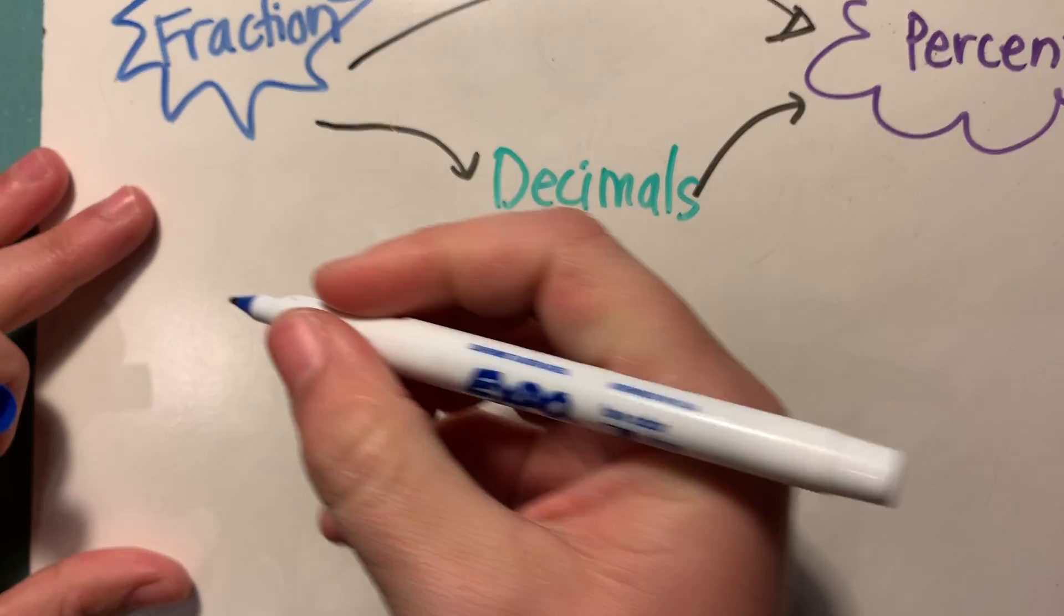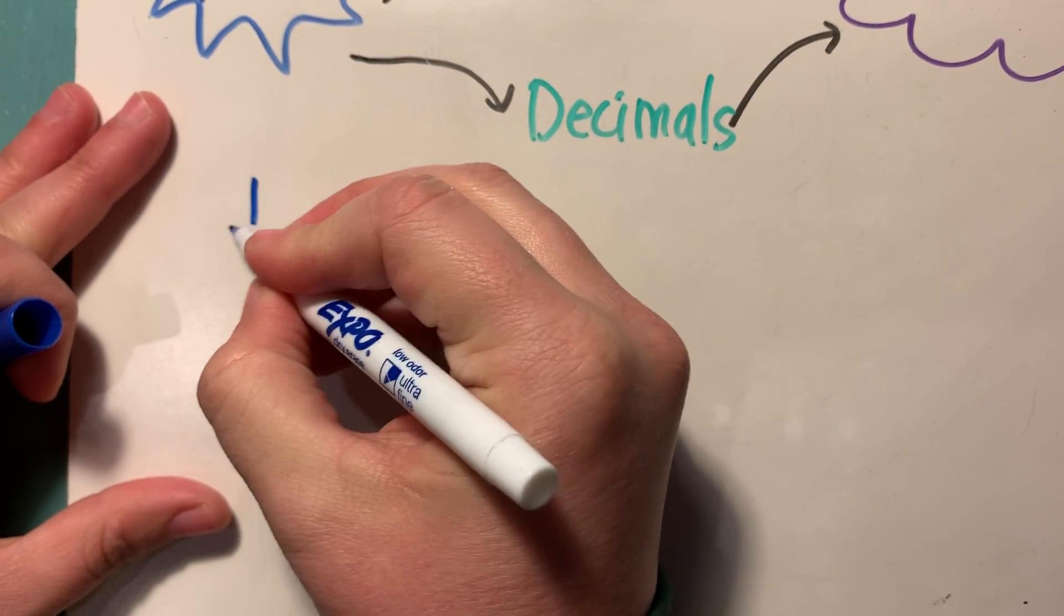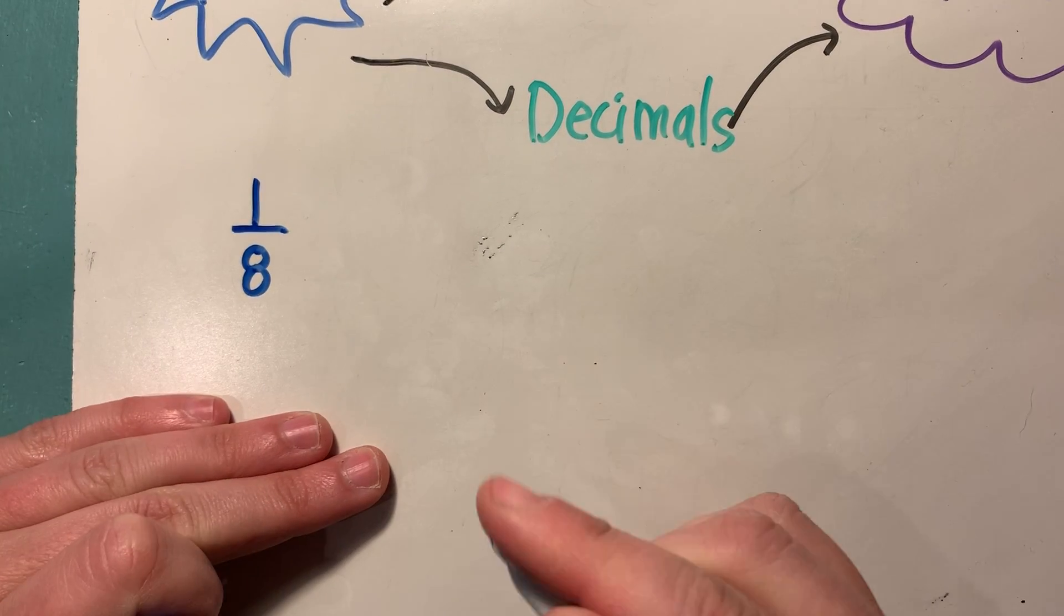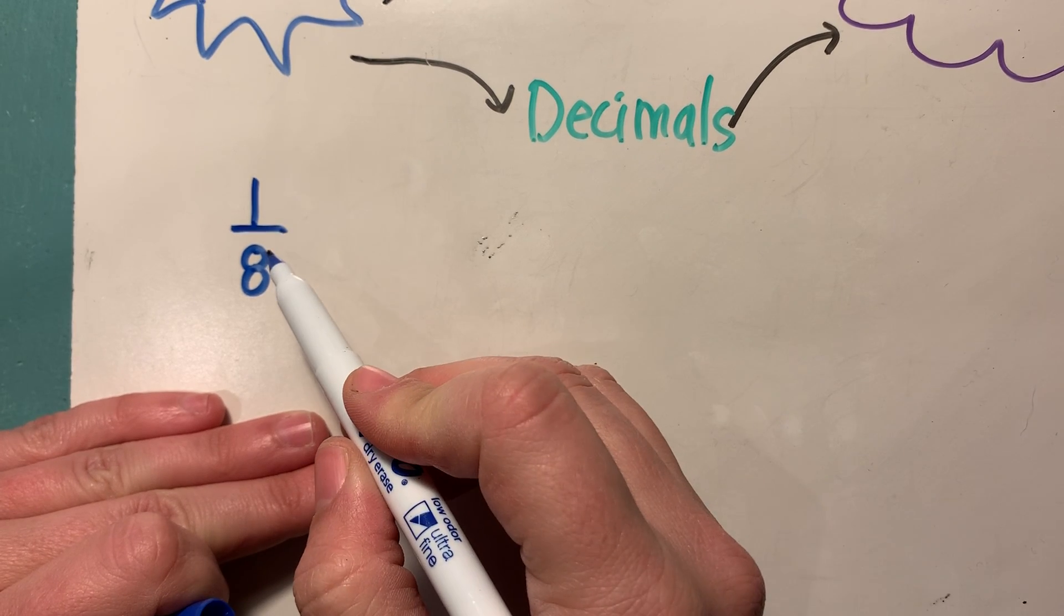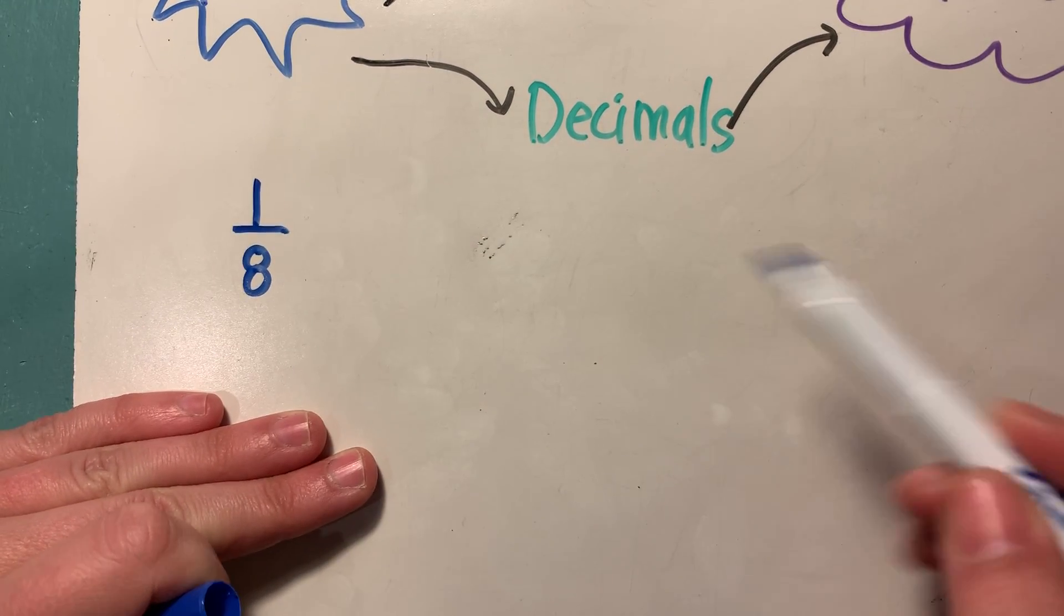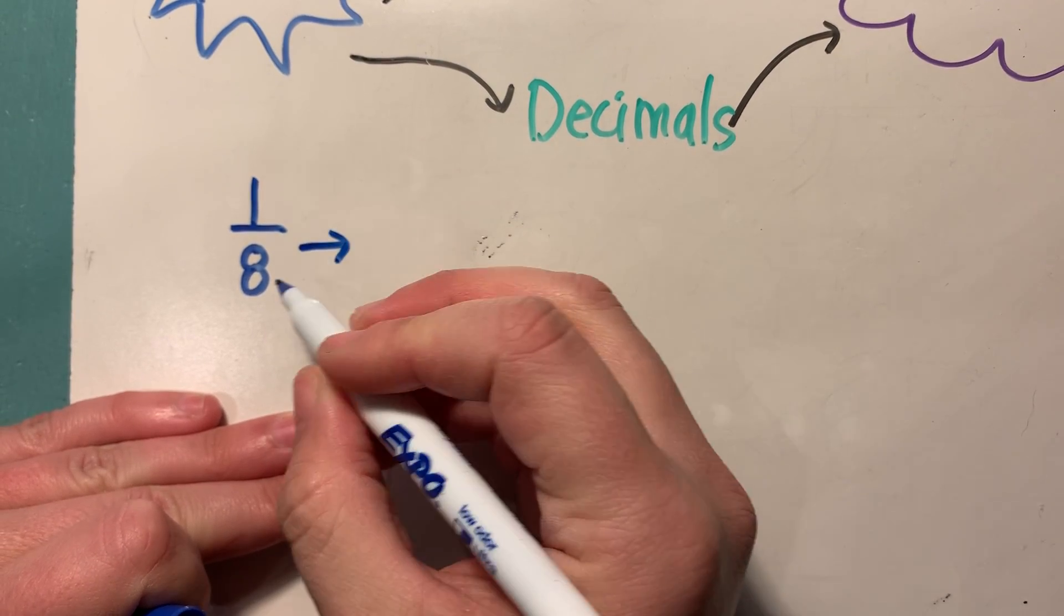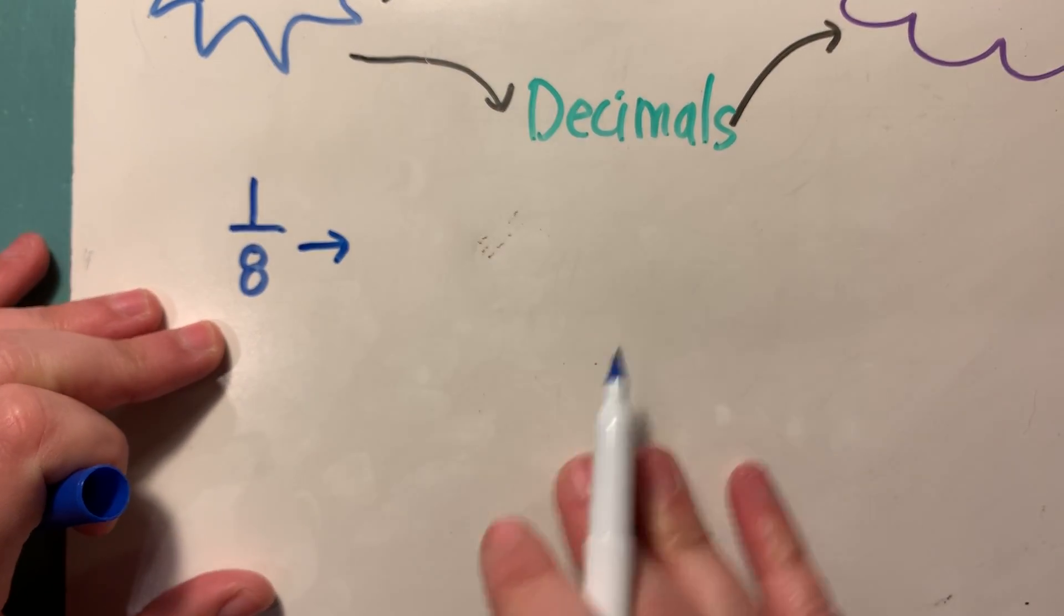So let's say I have the fraction. We're going to start with a challenging one. Let's start with one eighth. So instead of just jumping from one eighth into a percent, the first thing we're going to do is we're going to turn this fraction into a decimal.